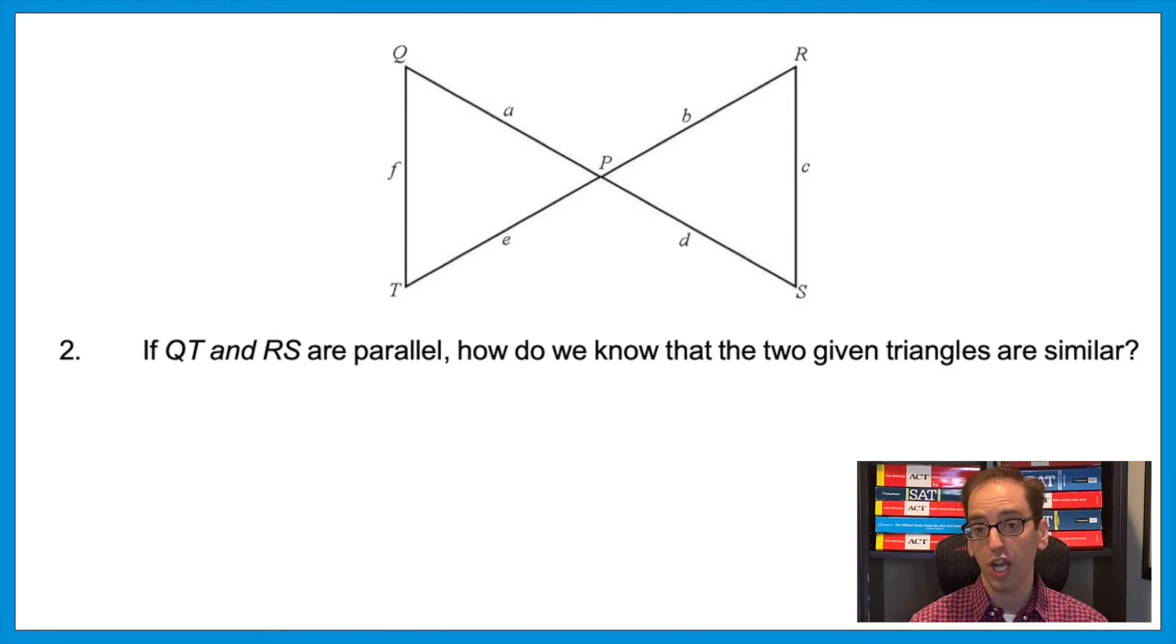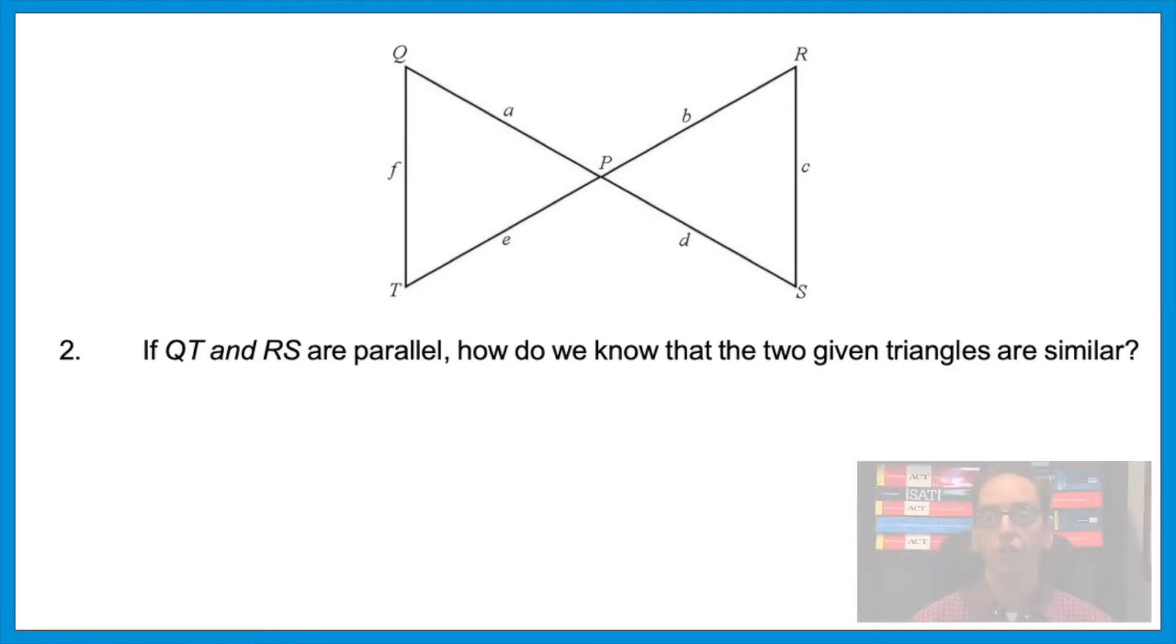So we know that those two angles that meet in the middle at P are equal. Angles QPT and RPS are vertical angles or opposite angles, so they're equal. Now what? In order to prove the triangles are similar, remember we only need two pairs of angles, so we just need one more pair. How could we do that? It's very important that the question tells us that those lines are parallel. That means that line QS forms a transversal between the two parallel lines. That means that angle Q and S are alternate interior angles, therefore they're equal.